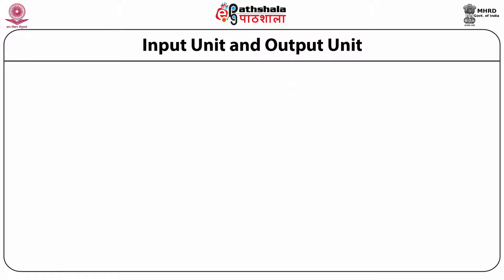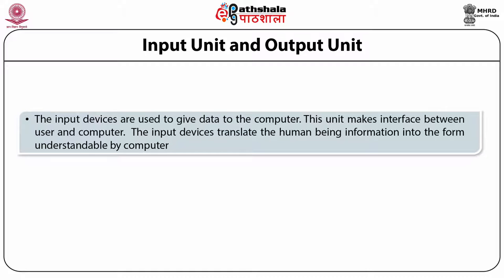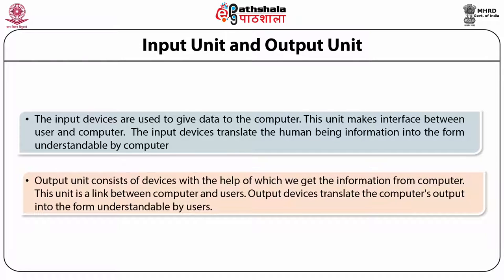Now coming to the various parts — input unit and output unit. Input devices or input units are used to give data to the computer. This unit makes an interface between the user and the computer and translates human information into a form understandable by the computer. The output unit is a device with the help of which we get information from the computer — it is a link between the computer and the user, and translates the computer's output into a form understandable by the user.